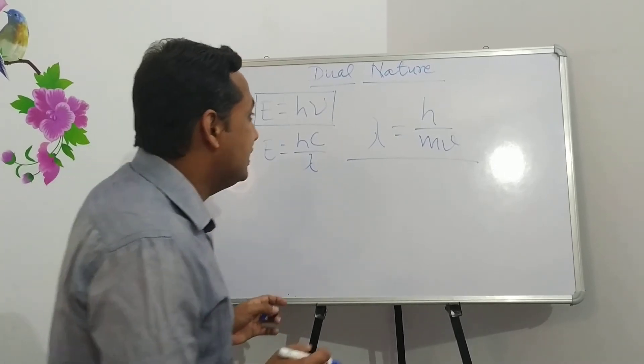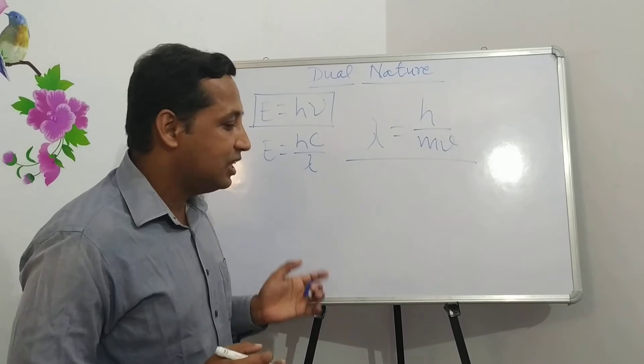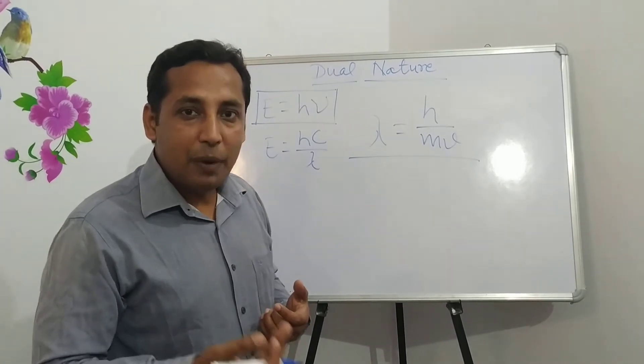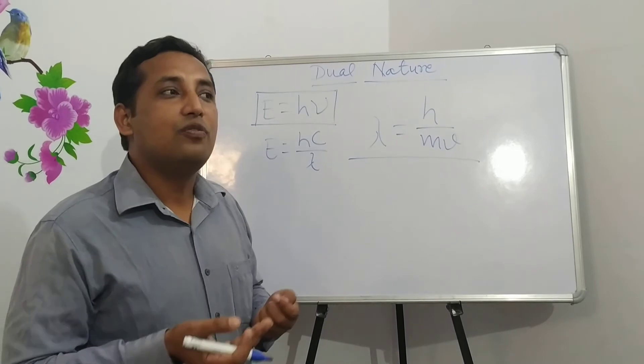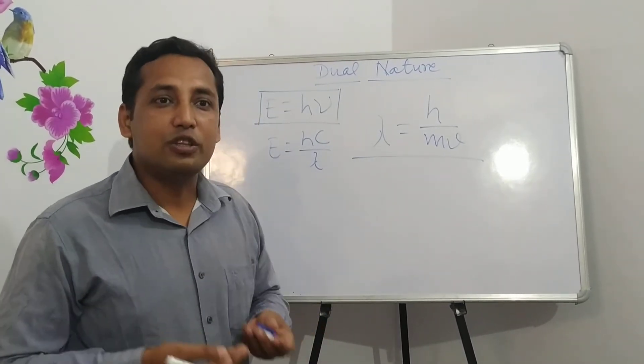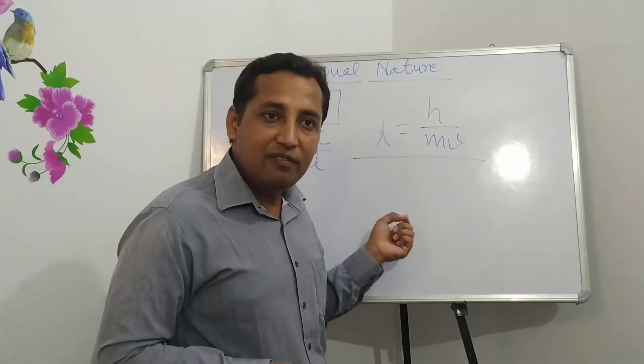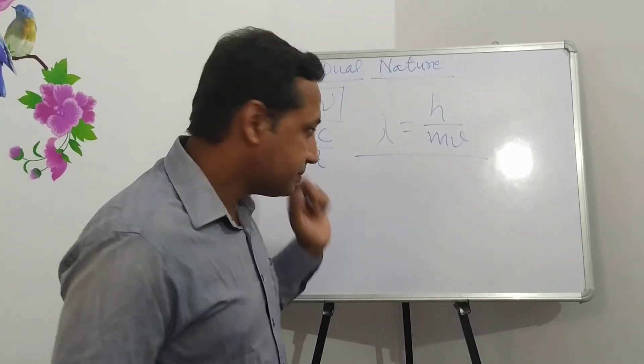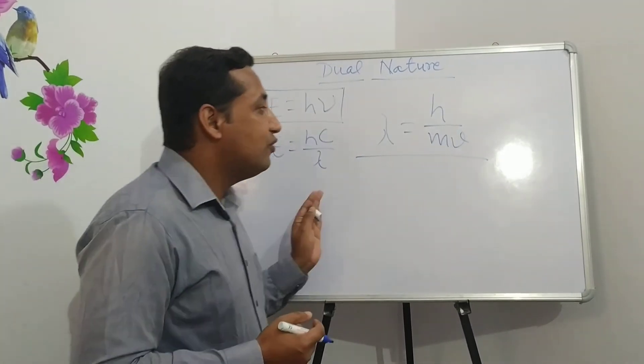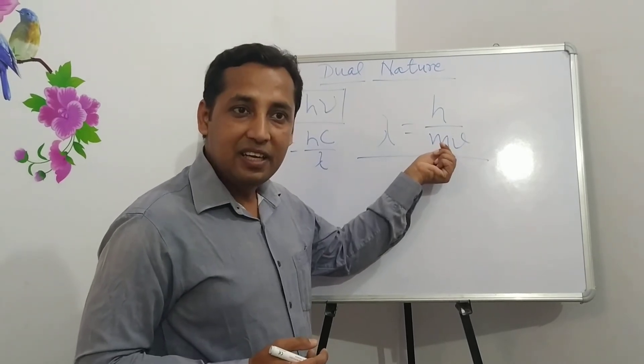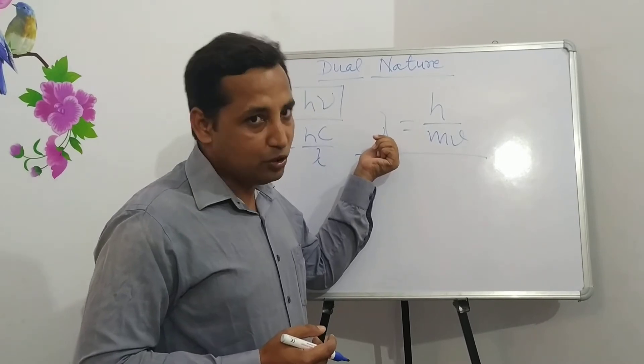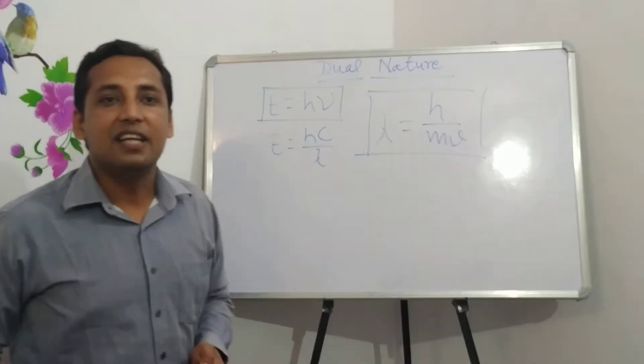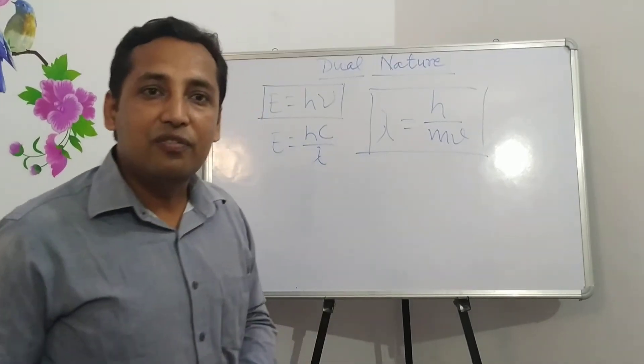And with the help of de Broglie's equation, we can convert a particle into wave. In case of small particles like electron or other microparticles, these particles always show these two behaviors: particle nature and the wave nature. If we have the value of velocity or mass of any particle, then we can calculate the wavelength of electromagnetic waves. This relation is very crucial to explain any particle in terms of wave.